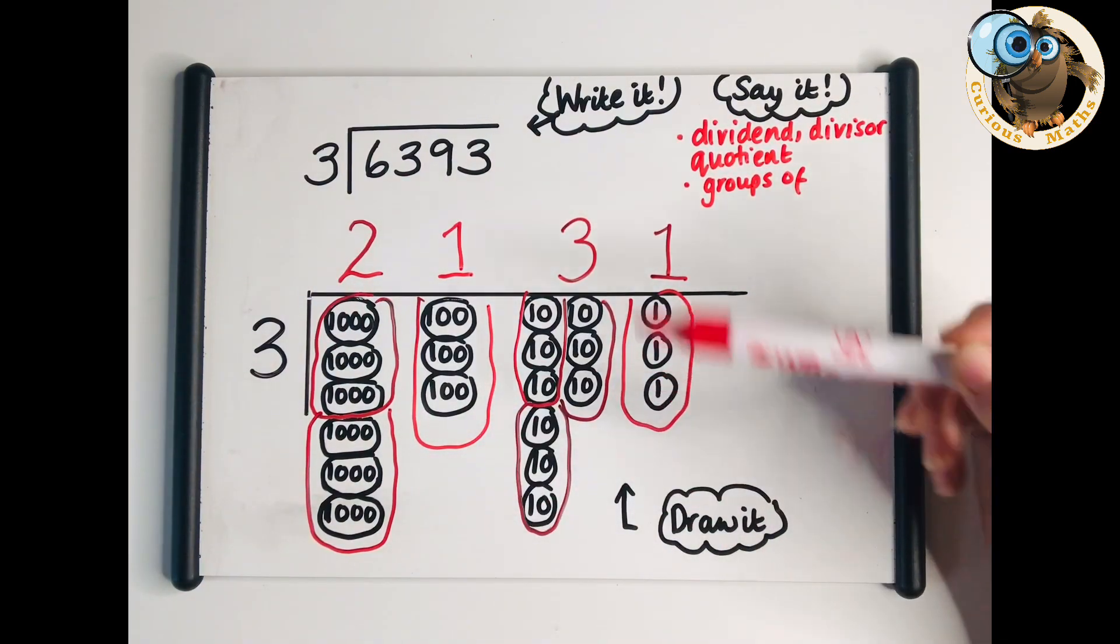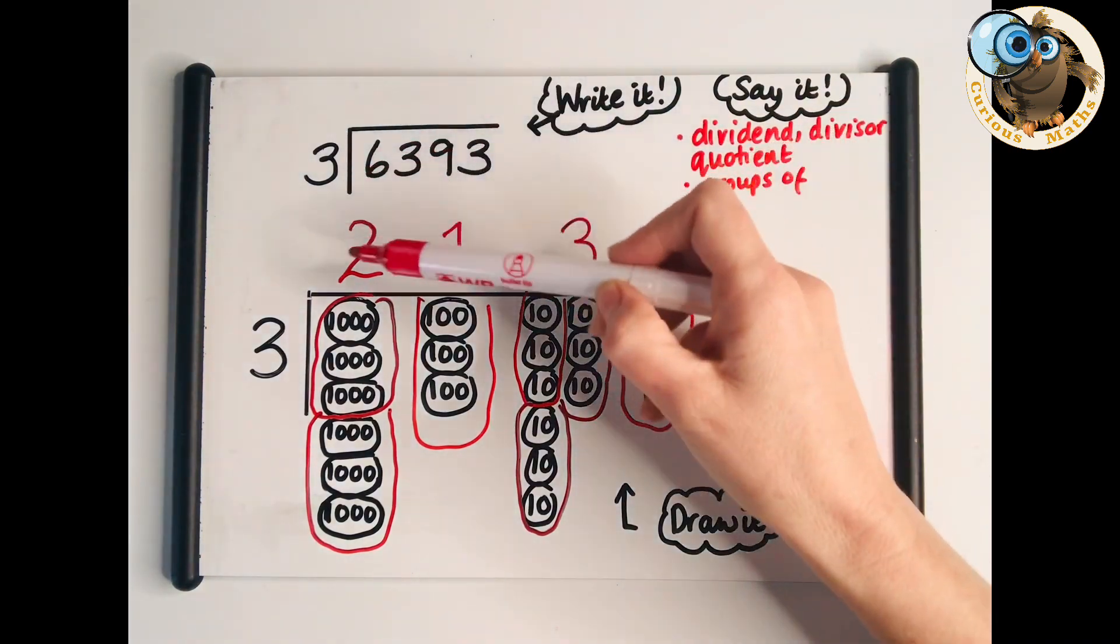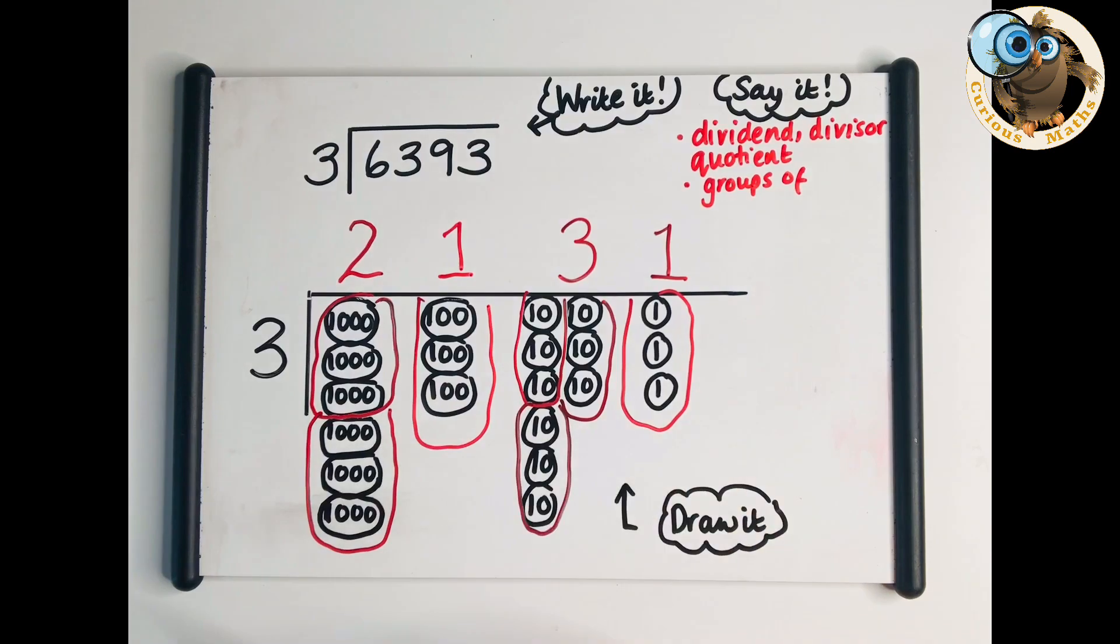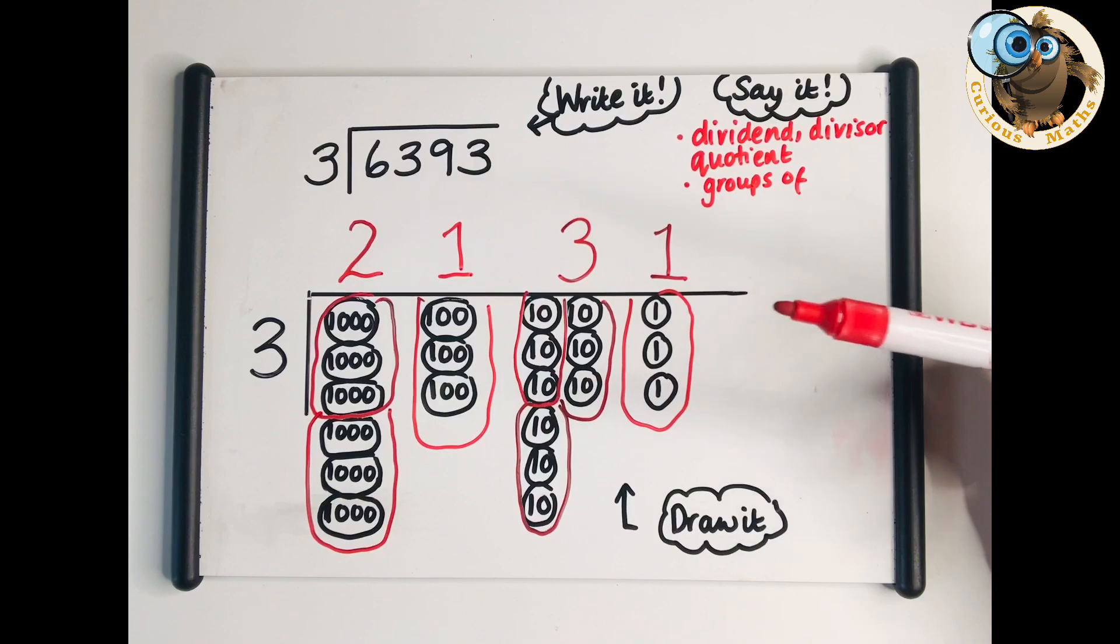We can take them back to understand that these are thousands by actually drawing them out. So that's how I would represent 6,393 divided by 3 using a grouping model.